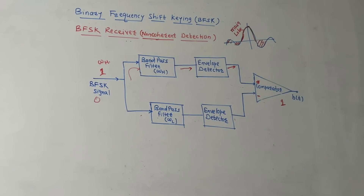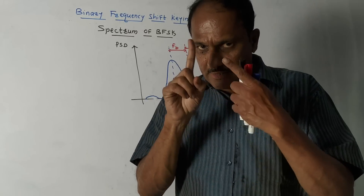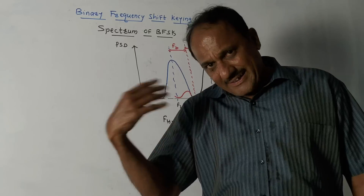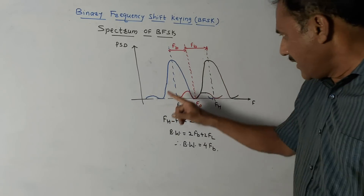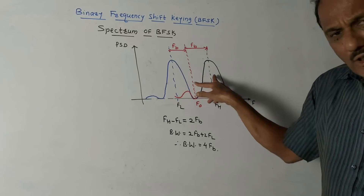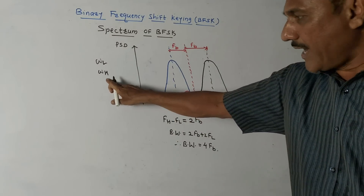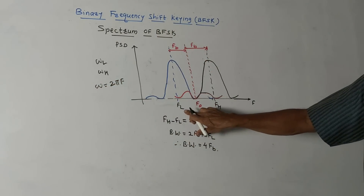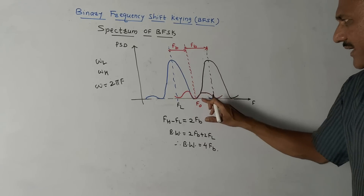Next is the spectrum of the BFSK signal — a graph of Power Spectral Density (PSD) versus frequency f. This graph shows two sync waveforms: one centered at fl (related to ωl, lower frequency) and one centered at fh (related to ωh, higher frequency). The center frequency is f0. There are two main lobes and associated side lobes, which arise due to the mixing of the two frequencies.